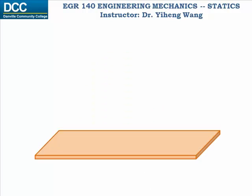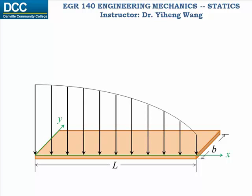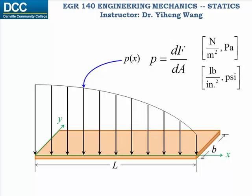Let's look at this piece of board resting on the ground. It has a length of L and width of b, and its surface is defined as the x-y plane. There's a distributed load acting on this board. Along the x direction, the pressure is a function of position, represented as p as a function of x. We know from physics that pressure is force over area, and it has a unit of Newton per meter squared, or Pascal, in the SI unit system, and pounds per inch squared, or PSI, in US customary unit system.